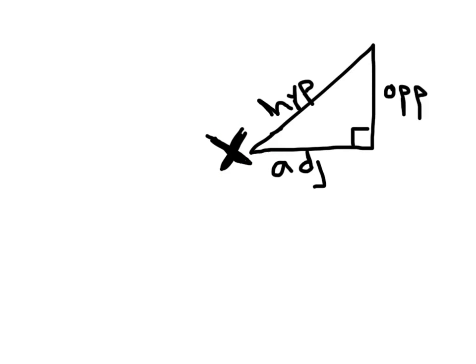Using this, I'm going to introduce the three trigonometric ratios that we look for in 90 degree triangles. We have sine, cosine, and tangent.